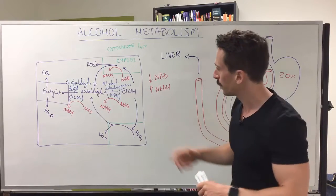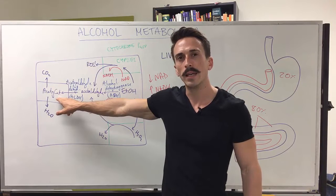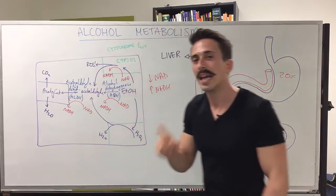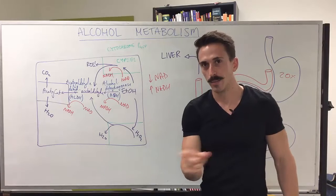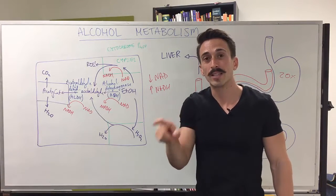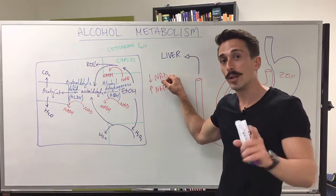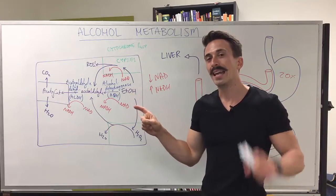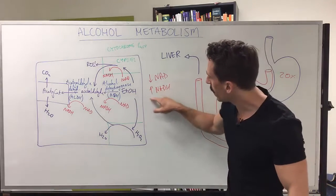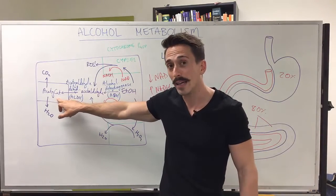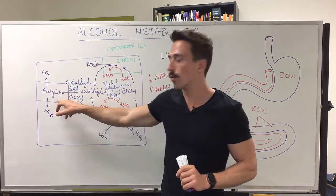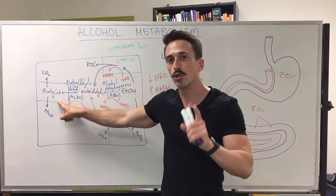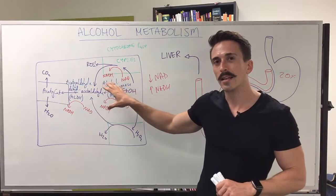Acetyl-CoA is very important for both fatty acid synthesis and fatty acid oxidation. In order for fatty acids to be broken down as energy — fatty acid oxidation — we need high amounts of NAD. We no longer have high amounts of NAD due to ethanol metabolism, so we can't break down fatty acids for energy. Instead, the high amounts of NADH and high amounts of acetyl-CoA are used to produce fatty acids, which are then stored as triglycerides in the liver — leading to a fatty liver.